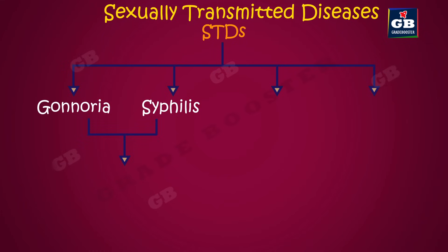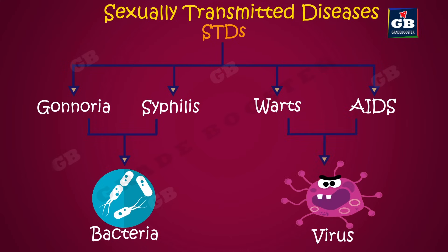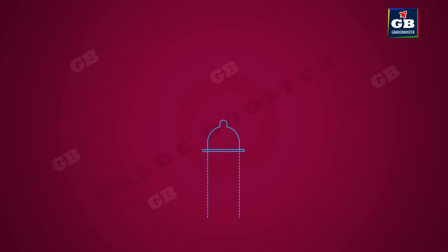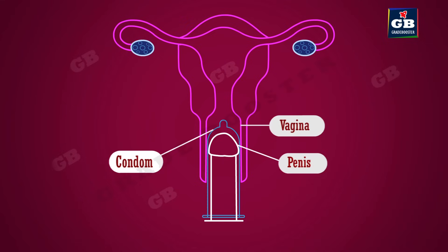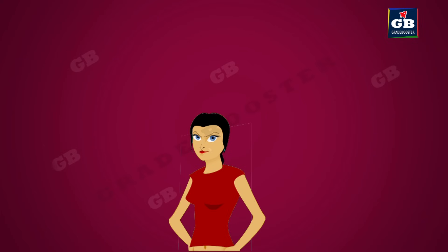Examples of STDs include gonorrhea and syphilis, which are caused by bacteria, and warts and HIV/AIDS, which are caused by viruses. Sexually transmitted diseases can be prevented by using a condom. A condom is a rubbery covering worn on the penis or inside the vagina during sexual intercourse to prevent STDs, and to some extent also helps prevent pregnancy.